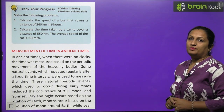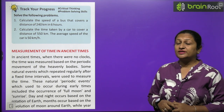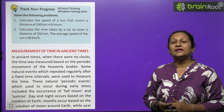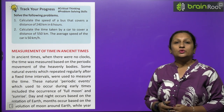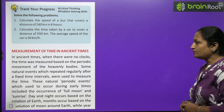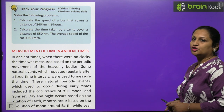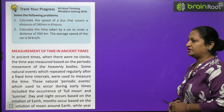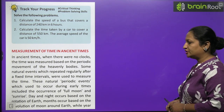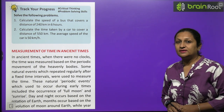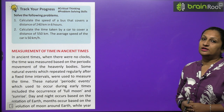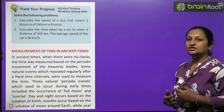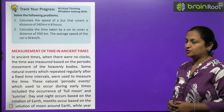Measurement of time in ancient times: in olden days there were no clocks or watches, so how did people estimate time? People used to observe the movement of planetary and heavenly objects to estimate time. They observed from one full moon to the next and called that period a month. They observed that from one sunrise to the next sunrise would be one day.